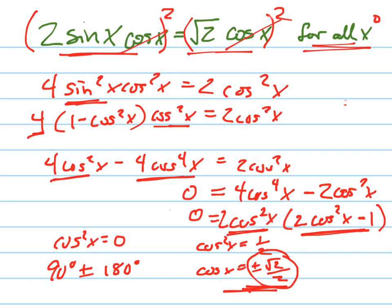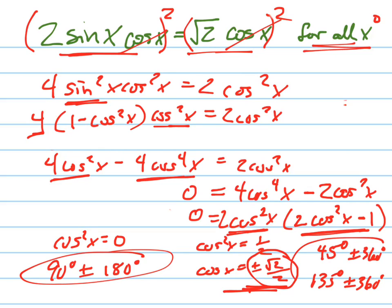So the only solutions, again, would be 45 degrees plus or minus 360, and 135 degrees plus or minus 360. So same answers, different ways of getting there. The easier way was to recognize kind of that shortcut by dividing out the cosine from both sides, but then remembering that the cosine of x could equal zero, and this equation would be true if that was the case.